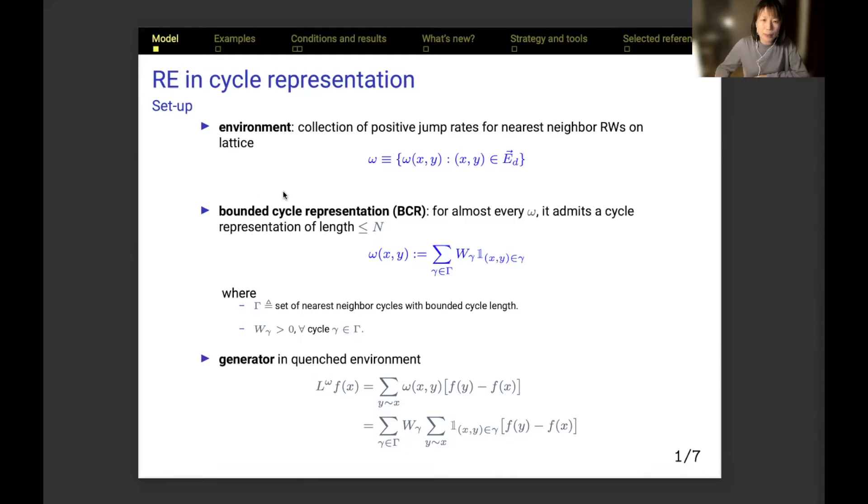In particular, we consider the environment space where each element admits bounded cycle representation with respect to some positive integer parameter n. It means that almost every environment can be seen as a collection of directed nearest neighbor cycles with bounded cycle length n. Each cycle has its own contribution to the jump rate of the edge that it traverses, and the cycle weights are always positive and depend only on the cycle.